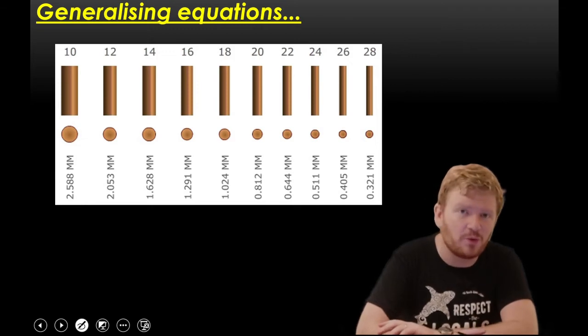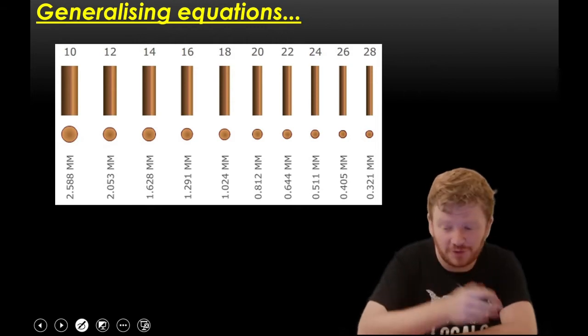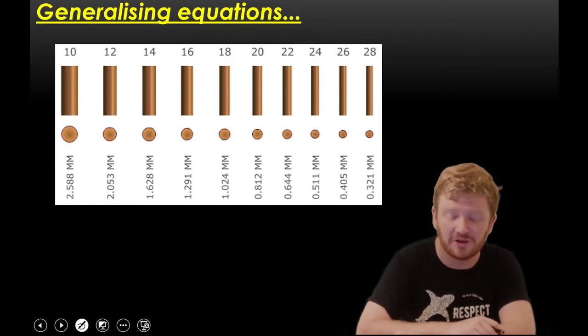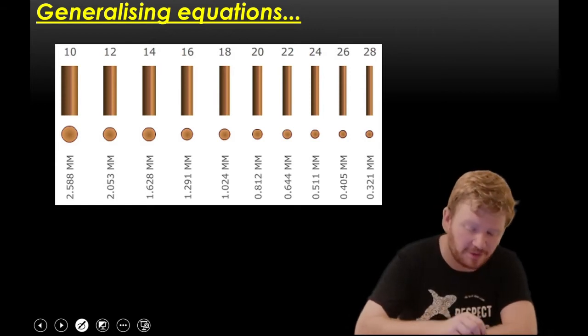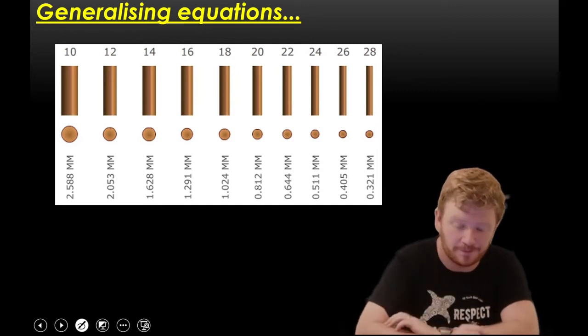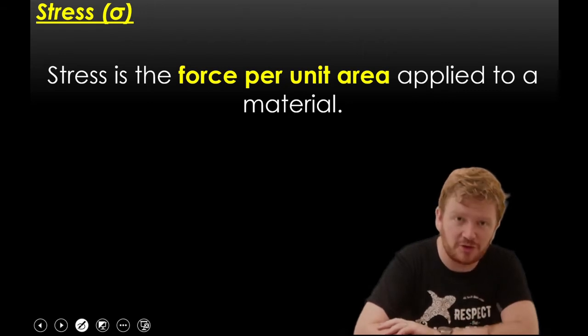So, even working with different wires and different threads, one thing that I hope has started to occur to you is that the equations we've got so far aren't terribly helpful. Because sometimes you could have thick wires and sometimes you could have thin wires. And the only way that we've got at the moment using Hooke's Law to tell how much it'll stretch by is to just experiment with another piece of wire and see how much it stretches. And that's not terribly useful for us. So, what we need is a more generalised form.